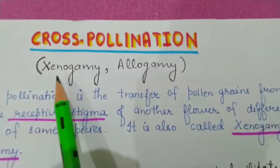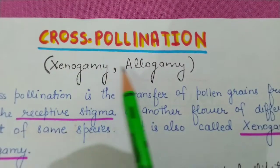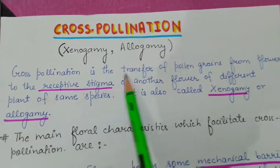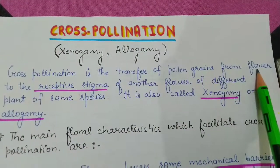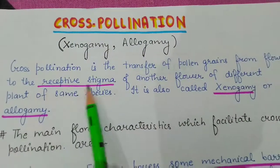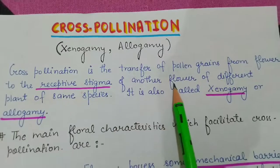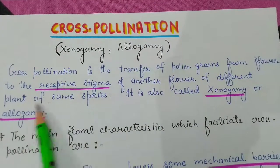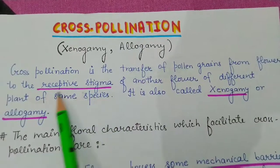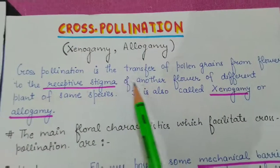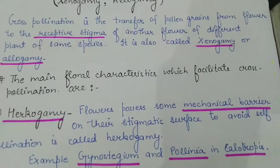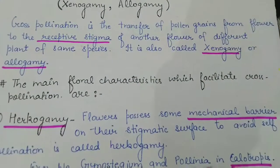Cross pollination is also called xenogamy and allogamy. Cross pollination is the transfer of pollen grains from a flower to the receptive stigma of another flower of a different plant of the same species — alag-alag plant, one species. For example, papaya. This phenomenon is called xenogamy and allogamy.